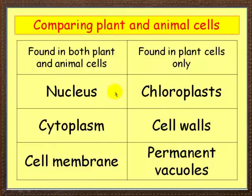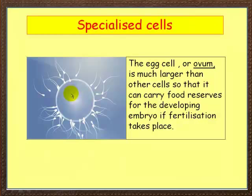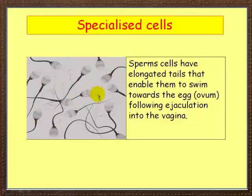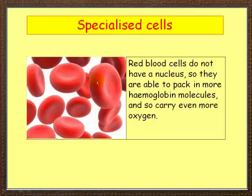Let's look now at more specialized cells. This is an egg cell, or ovum. You can see it's surrounded by lots of sperm. It's much larger than other cells because it carries food reserves, and a developing embryo will form here if the sperm gets through and fertilization takes place. Sperm themselves have elongated tails that help them swim to the egg following ejaculation. These are red blood cells — they are unique in the body in that they do not have a nucleus. Note this biconcave shape, very characteristic. Without a nucleus, they can pack in more hemoglobin molecules, giving them their red color and allowing them to carry even more oxygen.